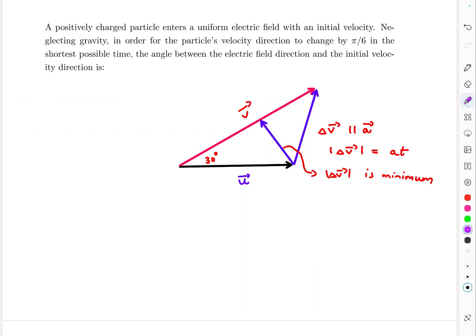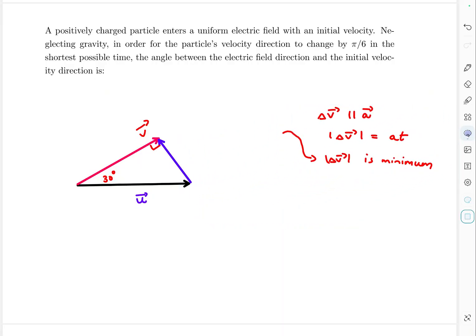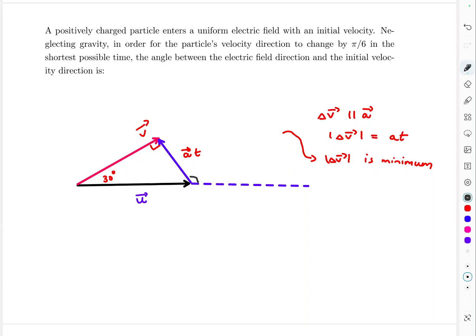We want delta-v to be as short as possible, which happens when it is perpendicular to the chord between u and v. Completing the vector triangle, the direction of the purple delta-v vector gives the direction of acceleration and hence the electric field. This angle works out to 60 degrees on one side, so the angle between the electric field and the initial velocity is 120 degrees — that is the answer for minimum time.